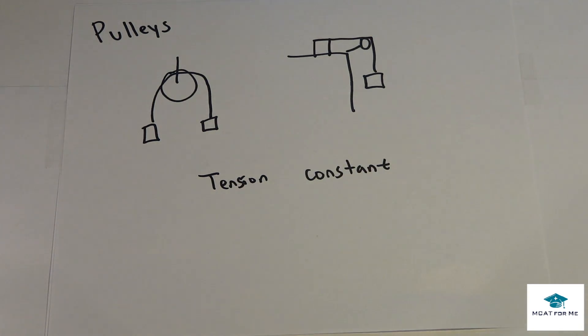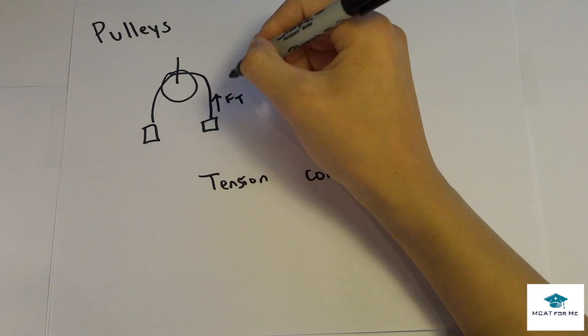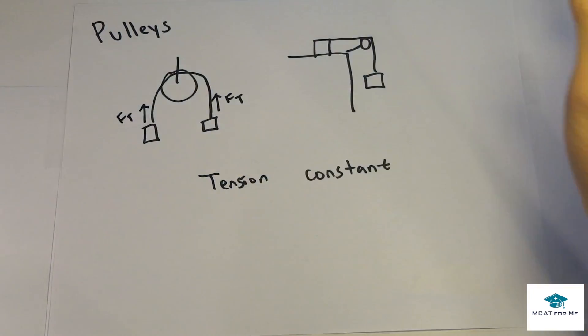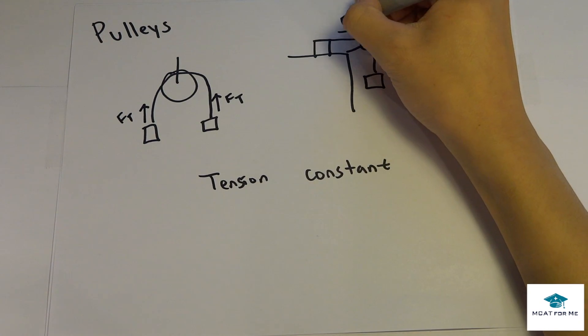Only thing that we need to notice is that the tension is constant throughout any type of rope. For the MCAT purposes, the tension is going to be constant no matter what the rope is. So the tension in this rope is going to be the same on this side as on this side. It's going to experience the same type of tension. Just like this, the tension here is going to be the tension here.